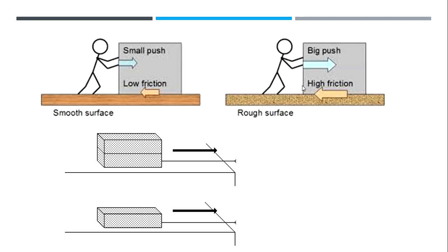Another thing friction depends on is mass. Friction increases when surfaces are pressed together. Friction also increases with the weight of an object — if something has more weight, friction will be more, and if something has less weight, friction is going to be less.